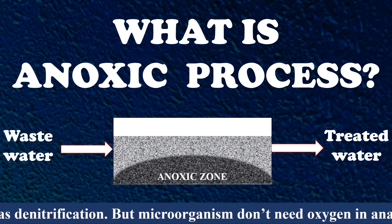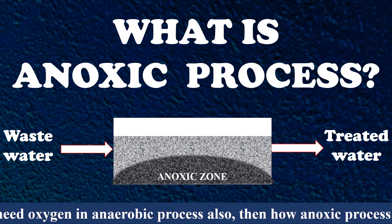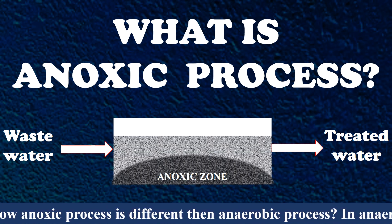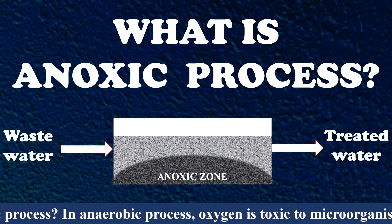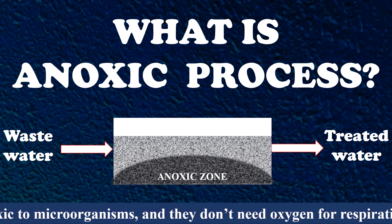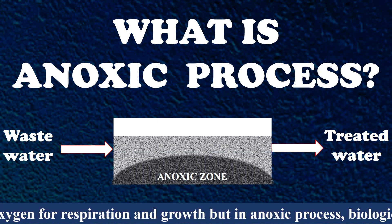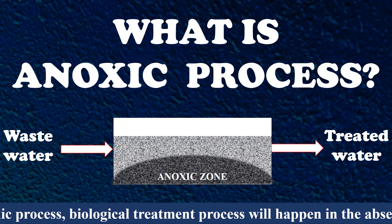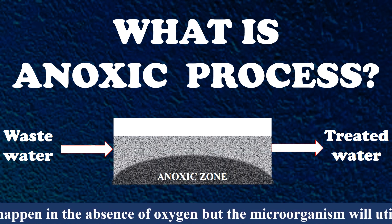Microorganisms don't need oxygen in anaerobic processes either. So how is the anoxic process different from the anaerobic process? In anaerobic processes, oxygen is toxic to microorganisms and they don't need oxygen for respiration and growth. But in the anoxic process, the biological treatment process happens in the absence of oxygen.